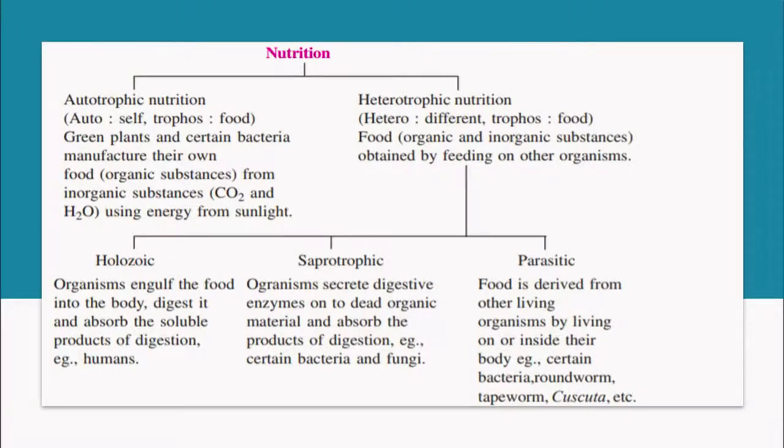The third mode of nutrition is parasitic. Parasitic organisms depend on other organisms for their food and ultimately harm them. Food is derived from other living organisms on or inside their body — examples include roundworm, tapeworm, and in plants, Cuscuta.